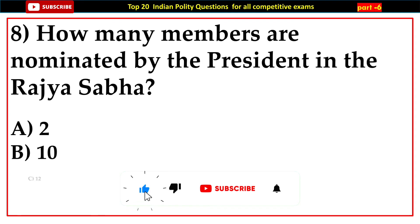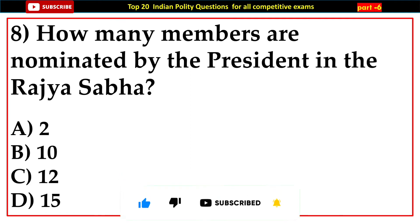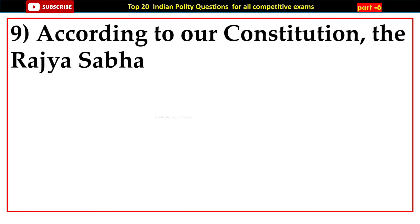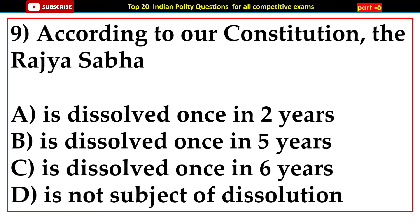Question number eight: How many members are nominated by the President in the Rajya Sabha? Options: A) Two, B) Ten, C) Twelve, D) Fifteen. Answer: C) Twelve.